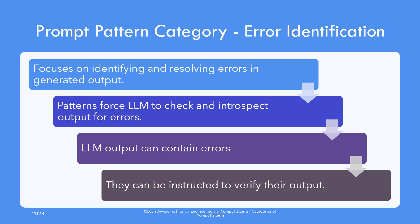Error identification category focuses on identifying and resolving errors in the generated output. The patterns in this category force the large language model to fact-check and introspect its output to identify any errors. Just note that large language models do not always produce correct output — they can miserably fail at solving intermediate-level mathematical problems and need to be instructed to verify their output. The patterns in this category help you instruct it in a meaningful way.